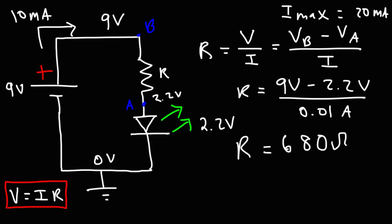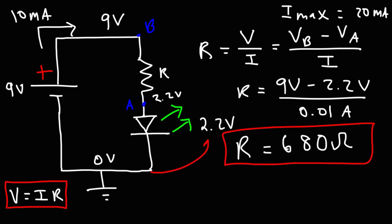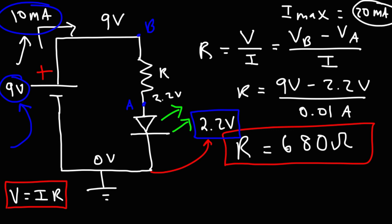So for this particular circuit, if we use a 680-ohm resistor, and if the voltage drop is 2.2 volts, then the current flowing in the circuit will be 10 milliamps when the battery voltage is 9 volts. That's how you determine the appropriate resistor to use in an LED circuit: look at the product label for the forward voltage drop, determine the battery voltage, decide how much current you want while respecting the maximum recommended current, and then use the formula to find the resistor.